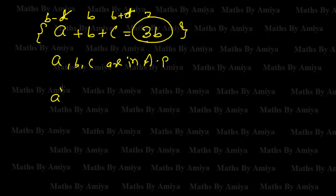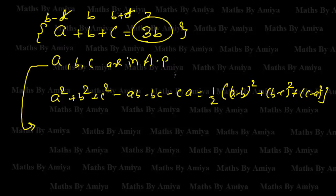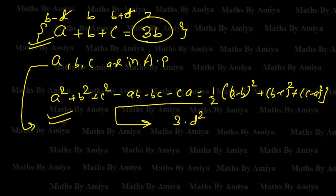The second one: a² + b² + c² - ab - bc - ca equals half into (a-b)² + (b-c)² + (c-a)². This is a simple formula, but if a, b, c are in AP and we put a = b - d, b = b, and c = b + d, and solve this value, we get 3d², where d is the common difference.